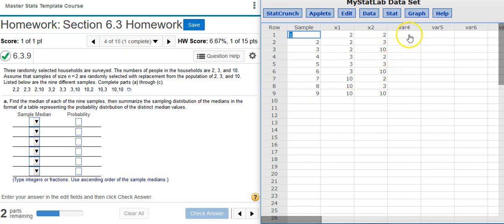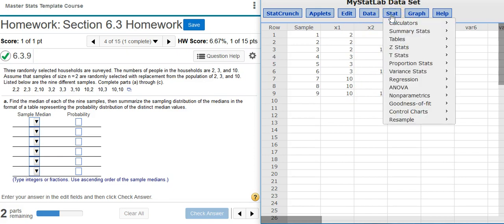So we're going to calculate the median value for each of these different samples. And to do that, I'm going to put my cursor over here in the next available column, and then I'm going to go up here to Stat, Summary Stats, Rows, because my data for the sample is listed in rows.